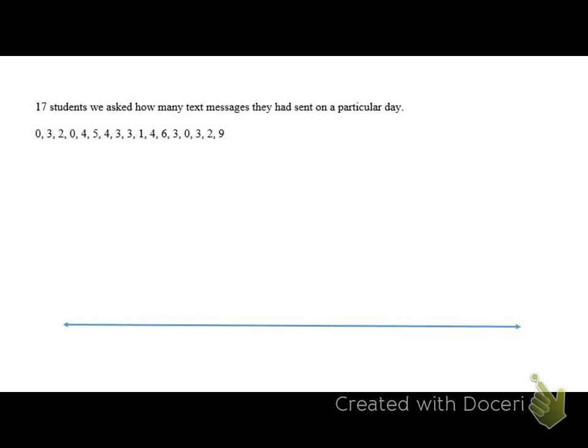So a dot plot is horizontal versus a stem and leaf plot being vertical. And it's just a number line. So there are 17 students. We asked how many text messages they had sent on a particular day. I think we all agree that we wouldn't be talking about text messaging anymore. We'd probably be talking about Snapchats or Snaps or whatever those things are called when you send them through Snapchat. And they'd be a whole lot higher than the numbers that we're looking at here. But you get the point. It's just to illustrate a point.